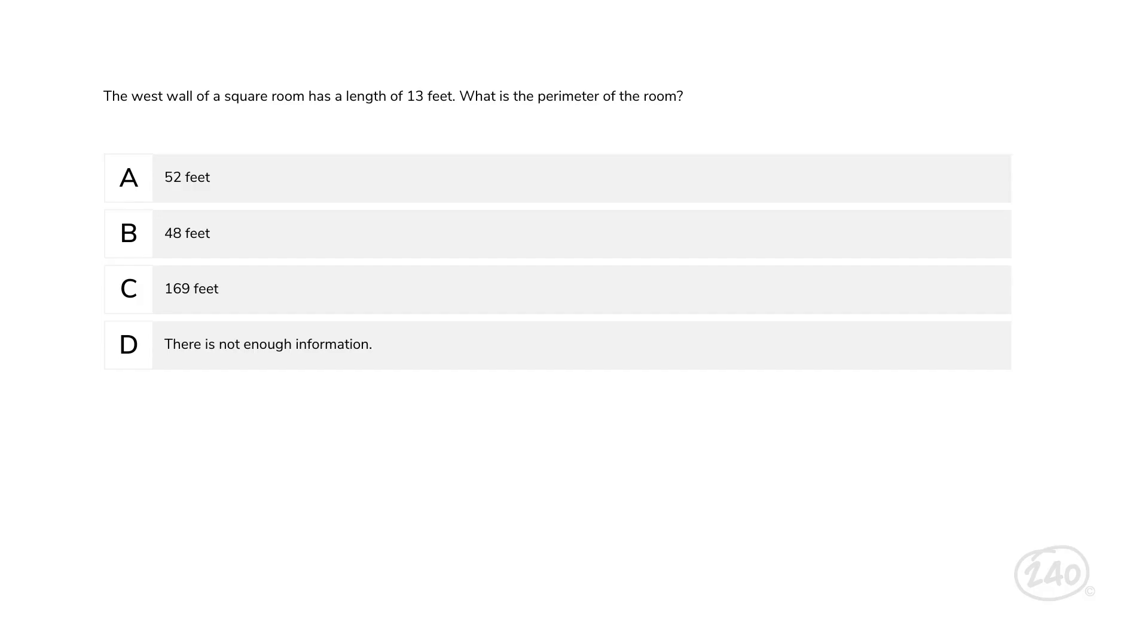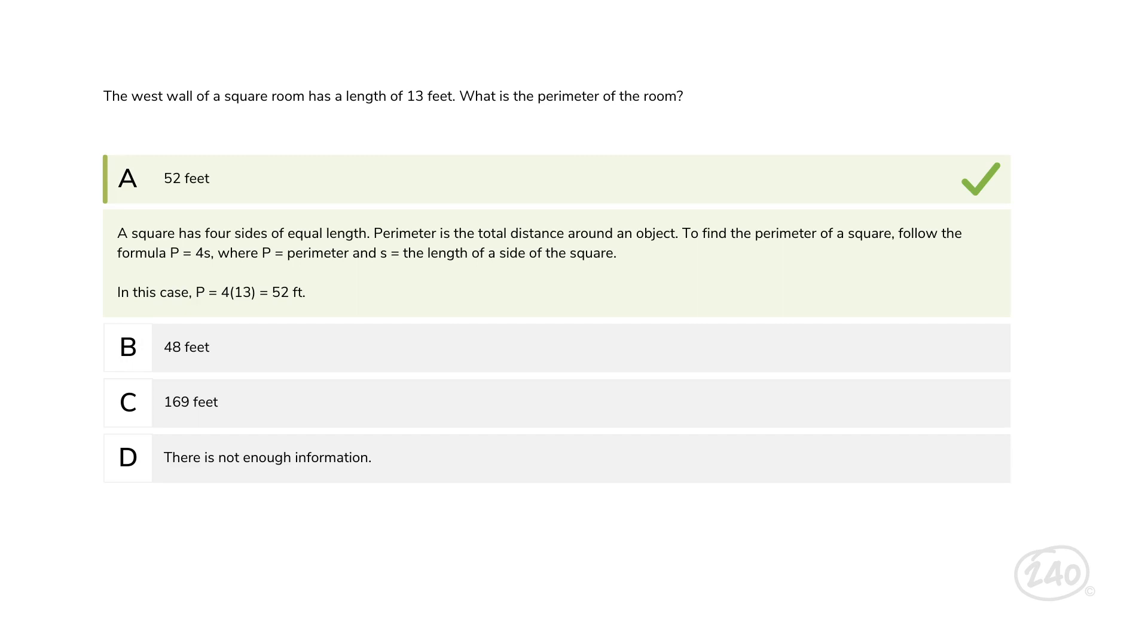Now for the next one, let's check out a perimeter problem. We're told the west wall of a square room has a length of 13 feet, and they want the perimeter of the entire room. Well, squares have four sides of equal measure. So the perimeter, the area around the figure, would be 4 times 13, which is 52. A is the correct answer.